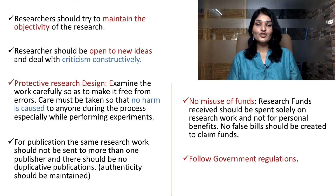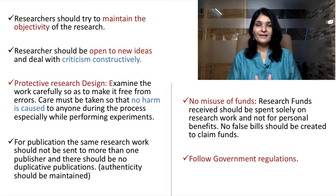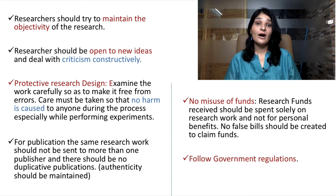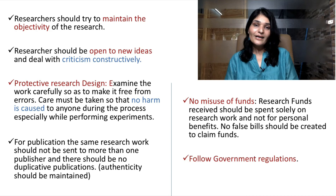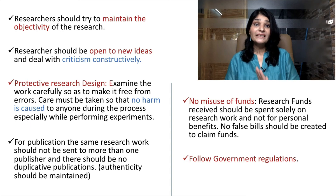The next is that for publication, the same research work should not be sent to more than one publisher, and there should be no duplicative publications. Whether it is a research article, research paper, dissertation, thesis, or even a book — the ethical code is that it should be submitted to just one publication house. Submitting to multiple publishing houses or duplicating the work in other publishing houses should not be done.